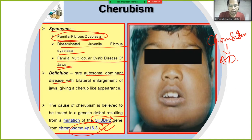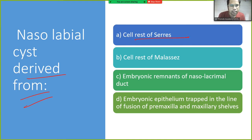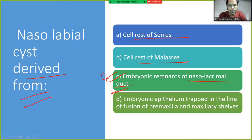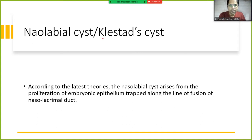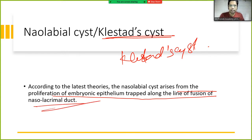Nasolabial cyst — what is it derived from? It is also known as Klestadt cyst. According to the latest theories, the nasolabial cyst arises from the proliferation of embryonic epithelium along the line of fusion of the nasolacrimal duct.